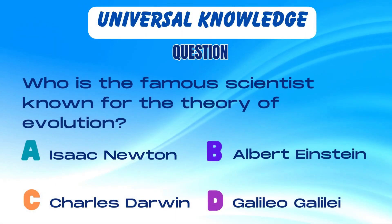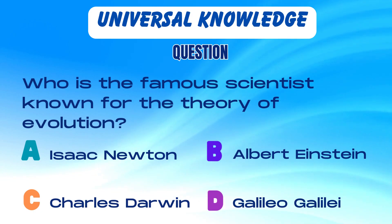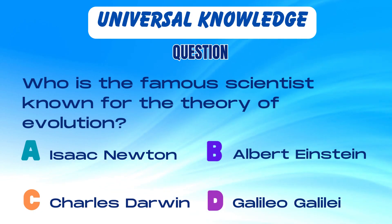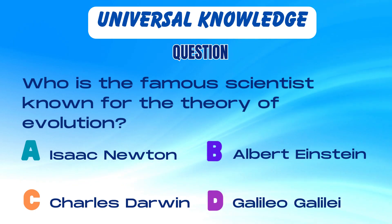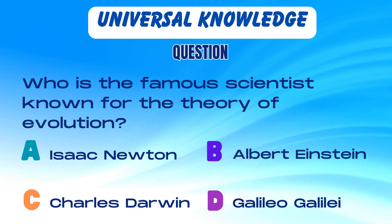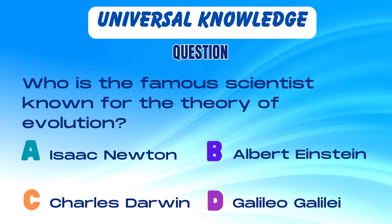Who is the famous scientist known for the theory of evolution? Is it A. Isaac Newton, B. Albert Einstein, C. Charles Darwin, or D. Galileo Galilei?